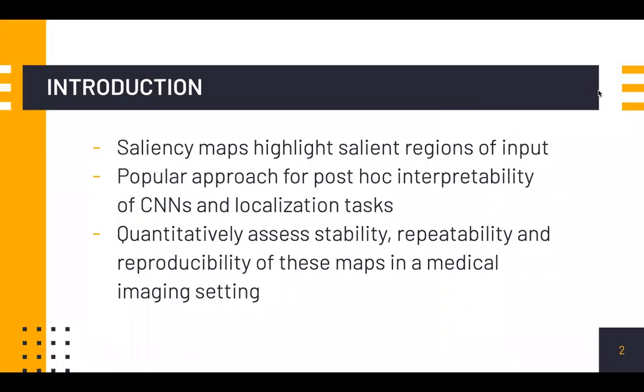Saliency maps are attribution methods that highlight the regions of an input image that were most influential for the model in making its prediction. These have become a popular approach for post-hoc interpretability of convolutional neural networks and even for localization tasks.